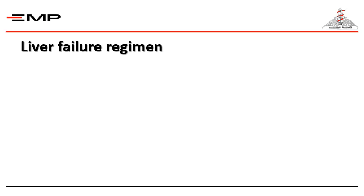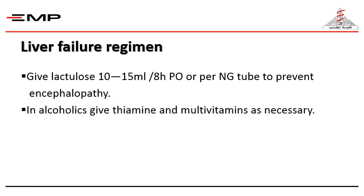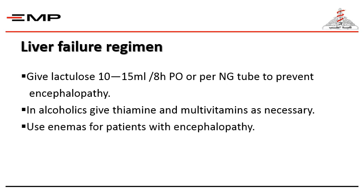Regarding the liver failure regimen: all patients with bleeding esophageal and gastric varices should receive anti-coma measures, for fear of liver decompensation being precipitated by the variceal bleeding episode. We give lactulose 10 to 15 milliliters every eight hours, per mouth or by nasogastric tube, to prevent encephalopathy. In alcoholics, thiamine and multivitamins are given as necessary, and enemas are used for patients who develop encephalopathy.